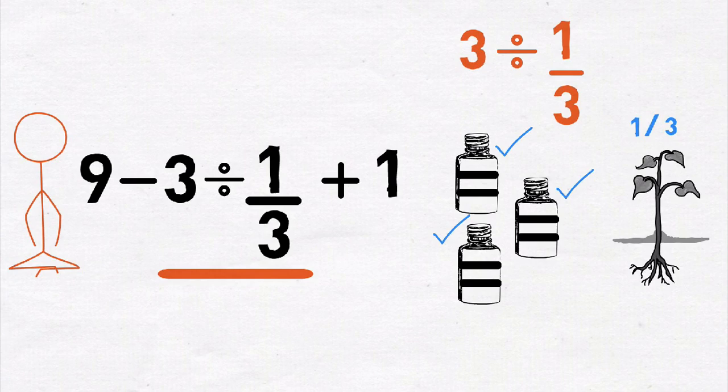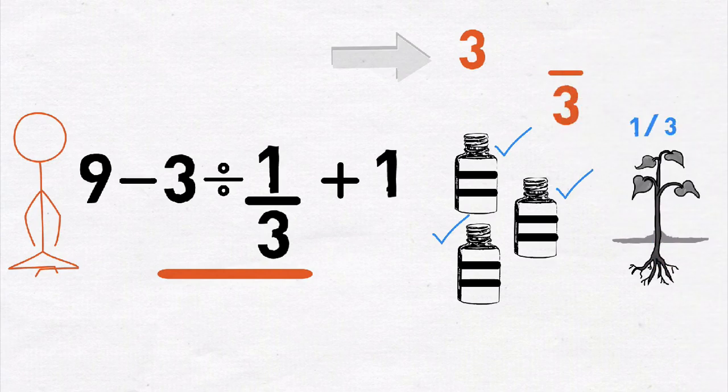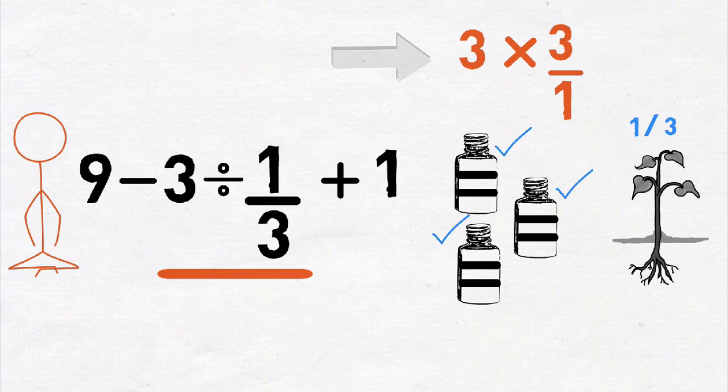So three jars can water nine plants, right? So what we are basically seeing is that three divided by one-third can be written as three multiplied by three divided by one, or just three multiplied by three. Now with this knowledge let us go back to our original problem and change it.